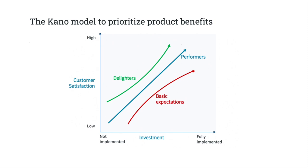What's interesting about delighters is that over time, as competitors start providing the same delighters you do, those delighters eventually become basic expectations. For example, if years ago having internet access in a restaurant was a delighter, now that's just a basic expectation.